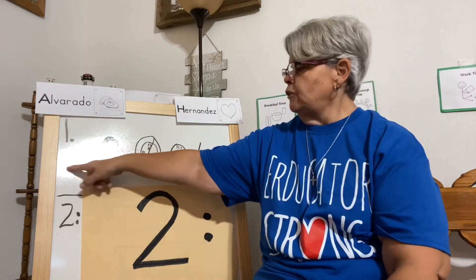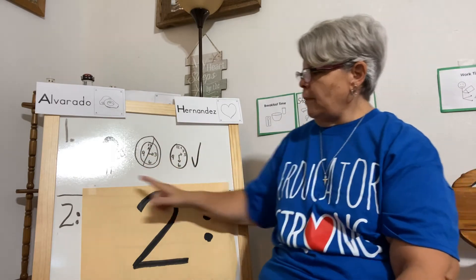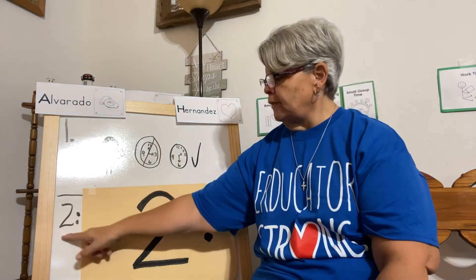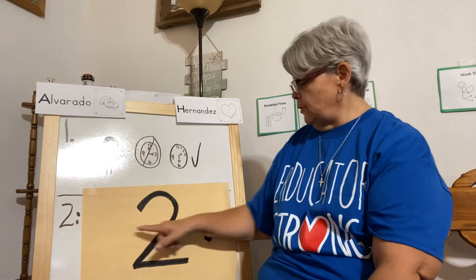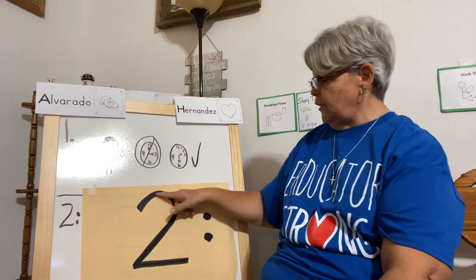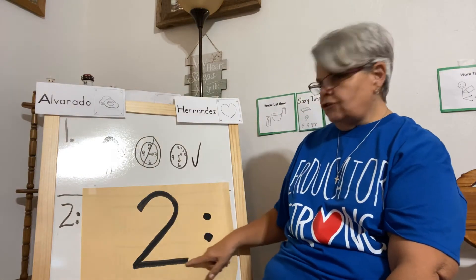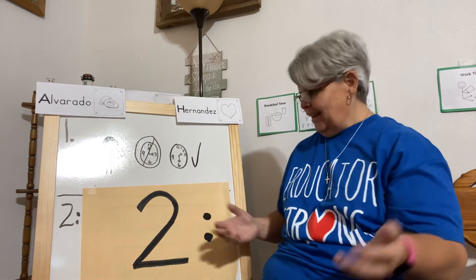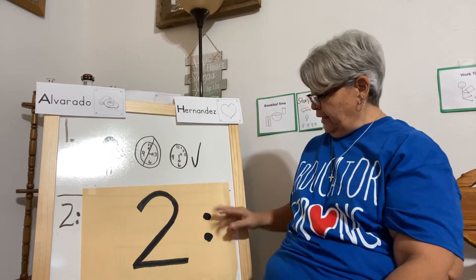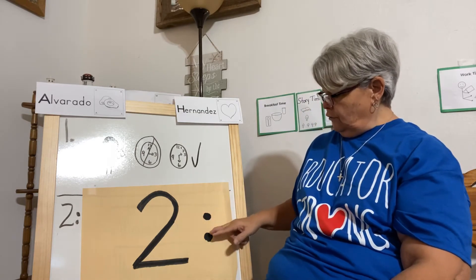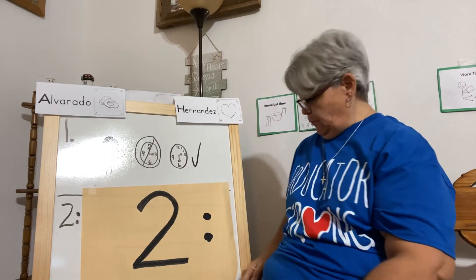So we finished reading message number one and we'll go back down and read message number two. Message number two is covered with the number two. That's right. And if you need to double check, you can count the dots — one, two. So this is the number two.